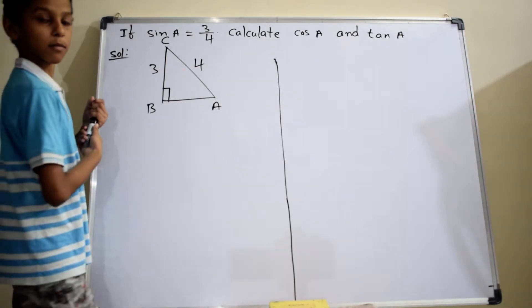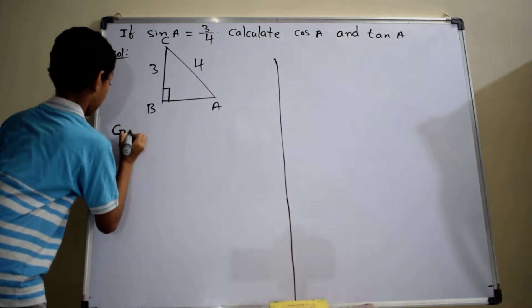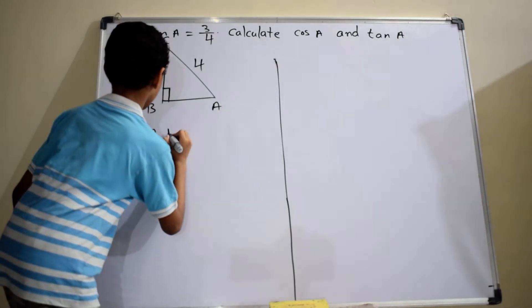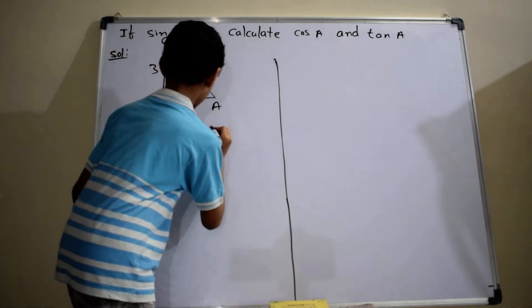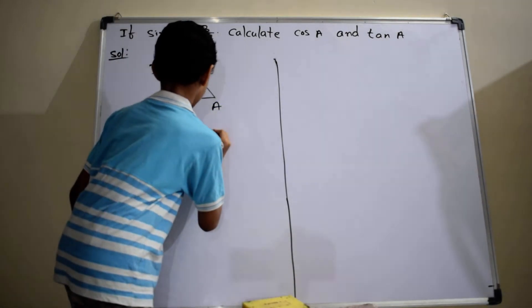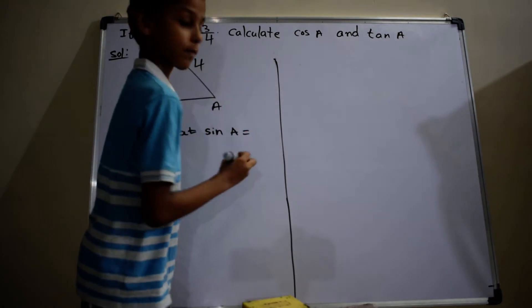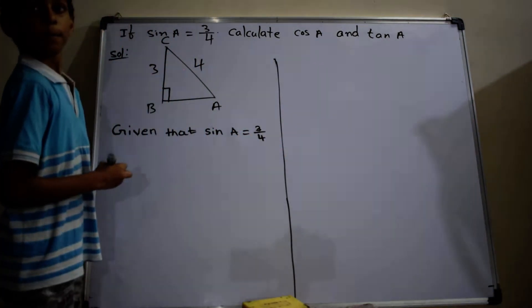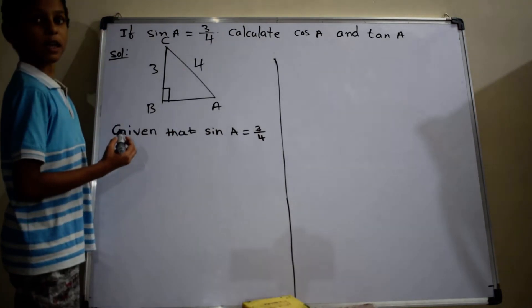Write the right angle at B. Given that sin A equals 3 by 4. By using the Pythagorean theorem, we have to find the length of AB.